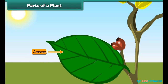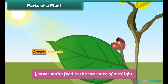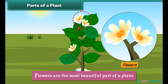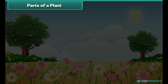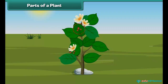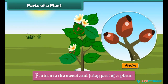Leaves are attached to the stem of a plant. They are green and flat. Leaves make food in the presence of sunlight. Flowers are the most beautiful part of a plant. They are of different colors and make plants appear colorful. Many flowers have seeds inside them. Fruits are the sweet and juicy part of the plant. We eat them. They are fleshy and sometimes contain seeds.